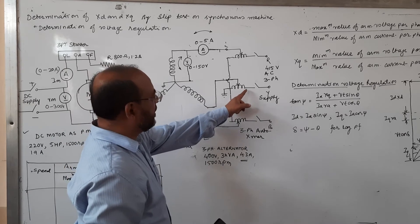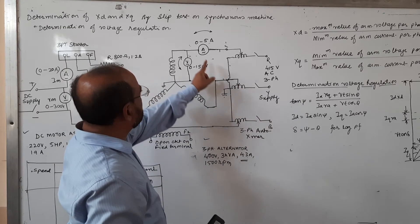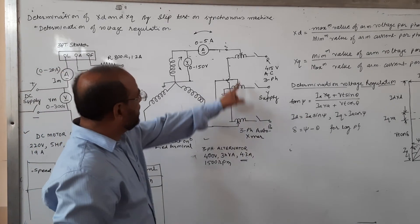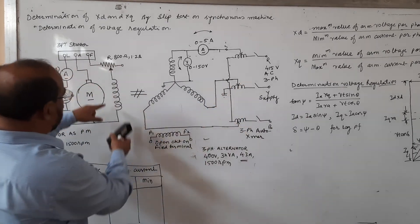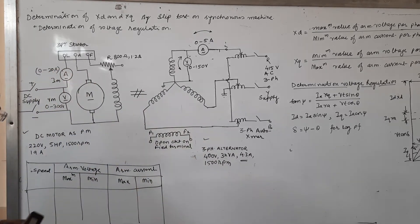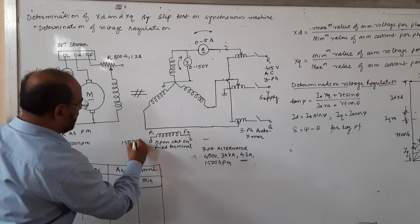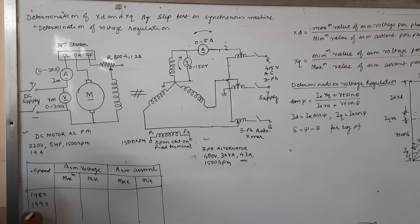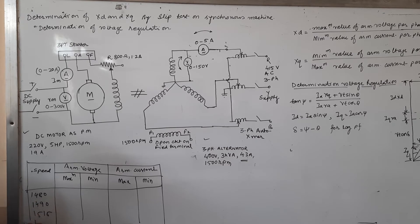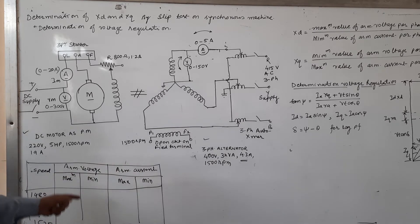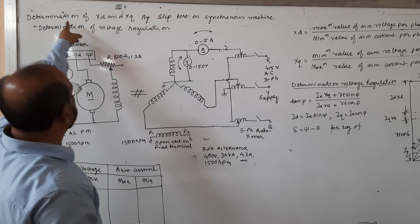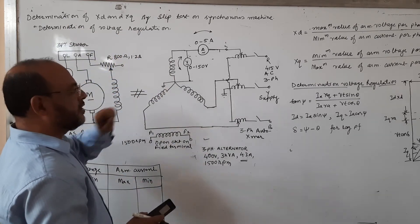Adjust the voltage supplied to the motor so that there is maximum deflection on the ammeter and voltmeter. If you are not getting maximum swing, change the speed near to synchronous speed — but it should not be equal to synchronous speed. For example, if the synchronous speed of the alternator is 1500 RPM, the speed may be 1480, 1490, or 1525 RPM. It is not equal to rated speed; there is a slip. That is why the test is called the slip test.